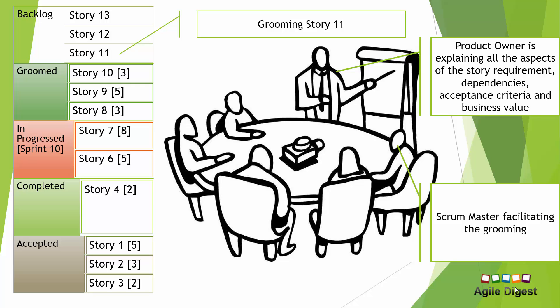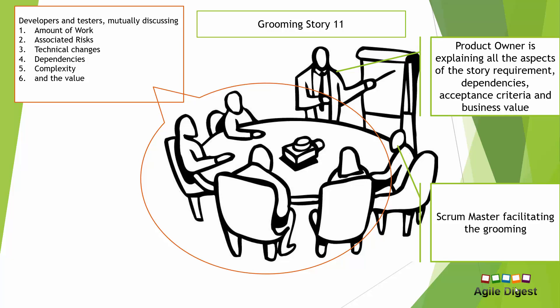The Scrum Master facilitates inputs between developers, testers, and the product owner, collaborating with cross-functional teams and coaching on agile practices. The four team members are thinking deeply about the stories — what the real amount of work is, associated risks, technical changes, dependencies with other Scrum teams, complexity of the code change, and the business value or business impact of that particular change.